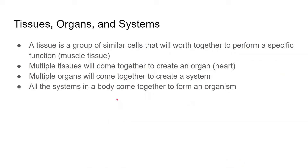Tissues, organs, and systems: a tissue is a group of similar cells that work together to perform a specific function. For example, muscle cells come together to make muscle tissue. Multiple tissues come together to create an organ — the heart, for instance, has cardiac muscle tissue, connective tissue, and more, all forming one single organ. Multiple organs come together to create a system. An excellent example is the digestive system: the pancreas, gallbladder, stomach, esophagus, large intestine, small intestine, and more all come together to form the digestive system. All the systems in your body come together to form you — the human, the organism.